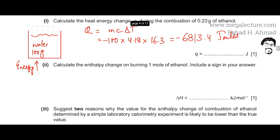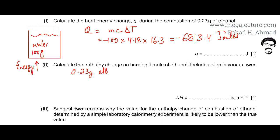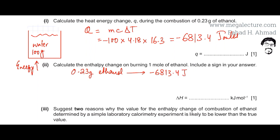Moving to the next part: we need to calculate the enthalpy change of burning one mole of ethanol and include a sign in the answer. We have found that 0.23 grams of ethanol produced −6813.4 joules of energy. We need to find what would happen if one mole of ethanol is burned, so first we calculate the moles of ethanol burned. Moles equals mass divided by Mr.